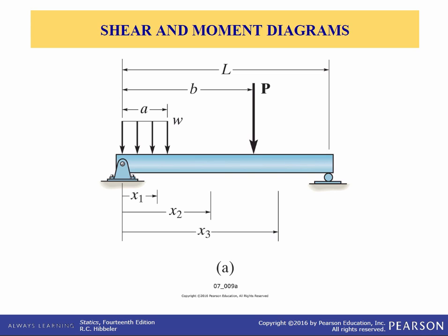Beams are structural members designed to support loading applied perpendicular to their axes. In general they are long and straight and have a consistent cross-sectional area. They are often classified as to how they are supported. For example, a simply supported beam is pinned at one end and has a roller support at the other, whereas a cantilever beam is fixed at one end and free at the other. The actual design of a beam requires a detailed knowledge of the variation of the internal forces — the shear and the bending moments.